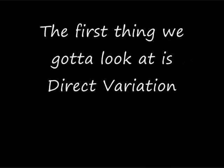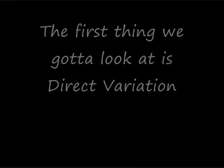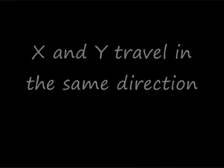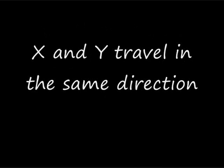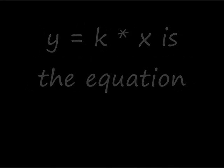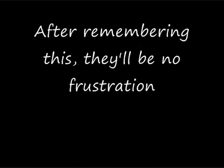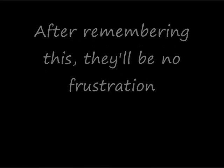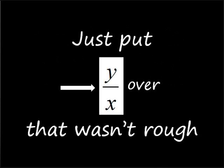First thing we gotta look at is direct variation — x and y travel in the same direction. y equals k times x is the equation. After you remember this, there'll be no frustration. To find k is easy enough, just put y over x.